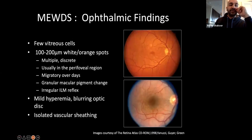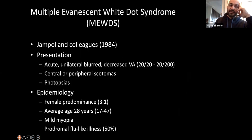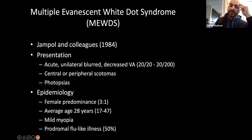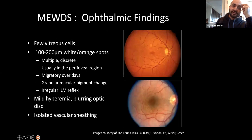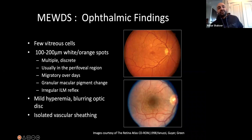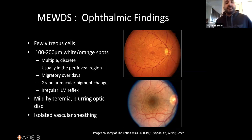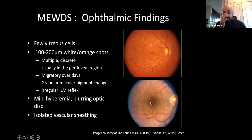MEWDS was first discussed in 1984 in Chicago by Dr. Jampol. It affects mostly females, mildly myopic patients, who often have prodromal flu-like illnesses. There are few vitreous cells, but sometimes if you look hard enough you see them. There's often hyperemia and blurring of the optic disc with isolated vascular sheathing, and there is this granularity of the fovea — if ever presented with this appearance, think about MEWDS.